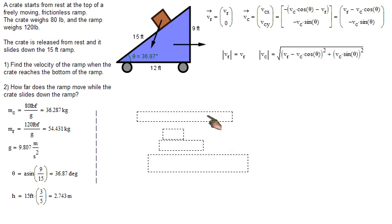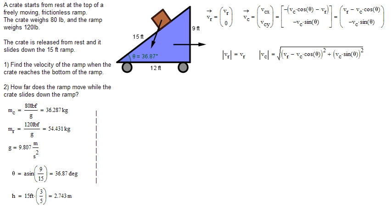So let's start with the conservation of energy. Conservation of energy states that all the energy at the beginning is going to be equal to all the energy at the end, if there are no losses. And in this case, there are no losses because the ramp is frictionless. So we have all the energy initially is localized all in the crate's potential energy. At the end, we have kinetic energy of the ramp and kinetic energy of the crate.